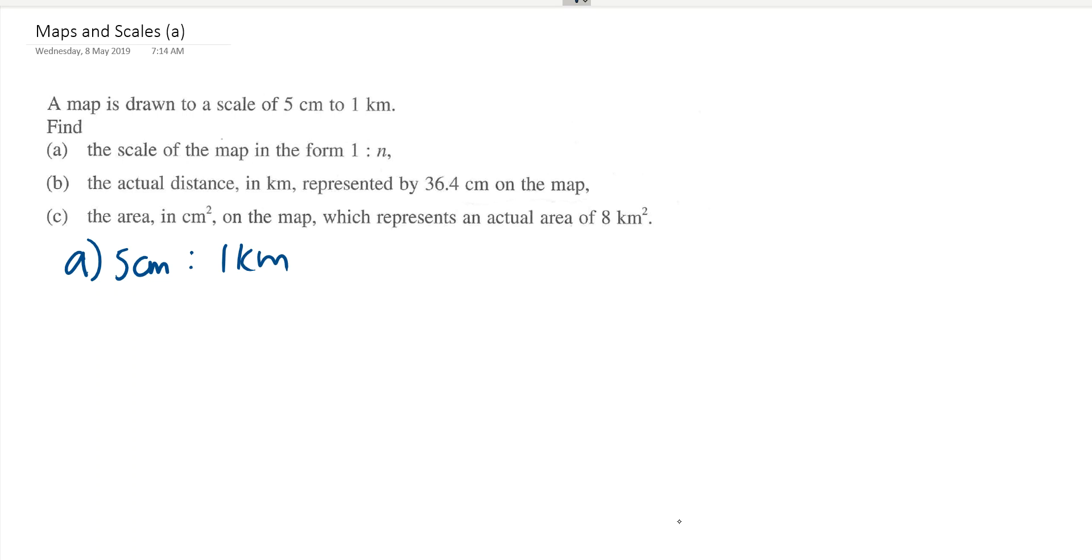The thing about maps and scale is always make the left side equals to 1. So 1 cm is to 0.2 km, and that is the starting position. This 1 cm is to 0.2 km is very important.